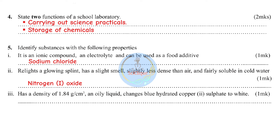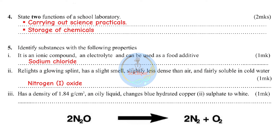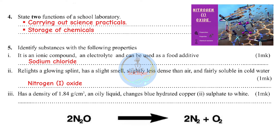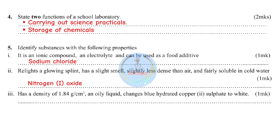Nitrogen(I) oxide can appear to relight a glowing splint, but not because of the gas itself. The heat from the glowing splint causes nitrogen(I) oxide to dissociate into nitrogen and oxygen gas, and it is that oxygen which relights the splint. There is a separate video covering nitrogen(I) oxide — its preparation, physical and chemical properties.